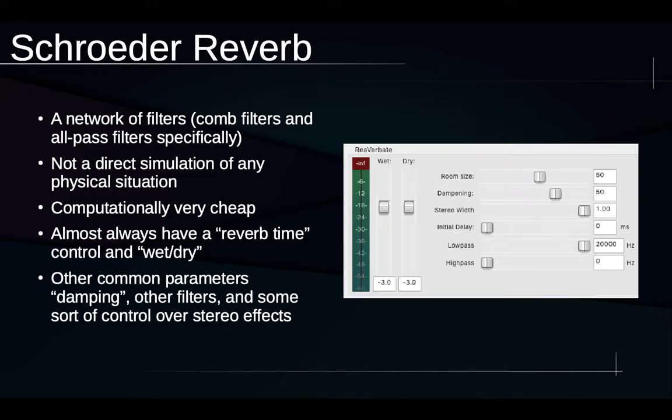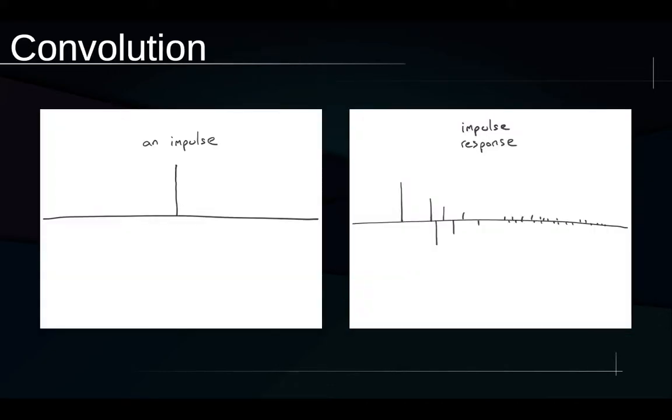The manipulation of any of those parameters will give us some audibly different results. We're going to move now to the second major way in which reverb is simulated with software nowadays and this is called convolution or convolution reverb. We're going to get to explaining how convolution reverb works in a series of steps.